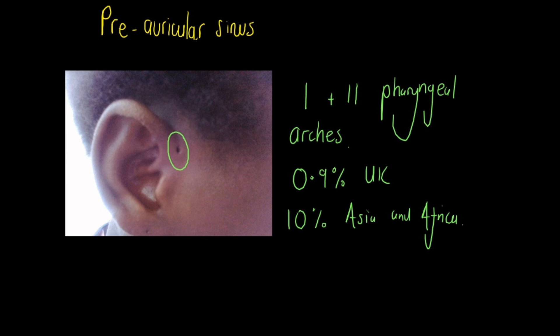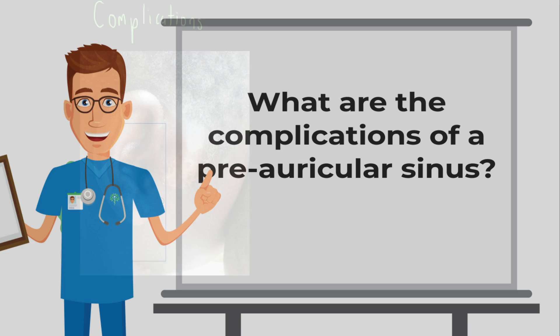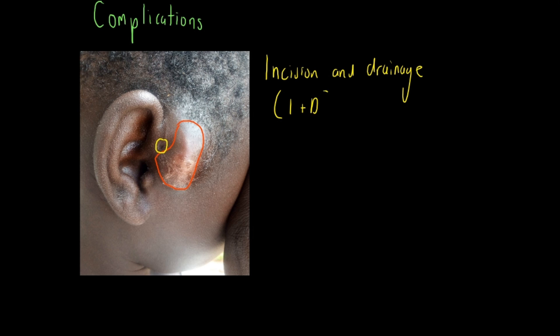It's important to know about preauricular sinuses because they can become infected. You need to be aware of the potential complications, and one of the most important is the formation of a cyst. In this photograph highlighted in red, you can see where a cyst has formed from a previously removed sinus, which is highlighted in yellow. The treatment for this is incision and drainage, otherwise known as I and D.